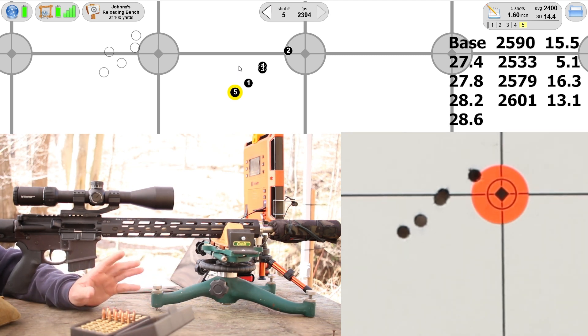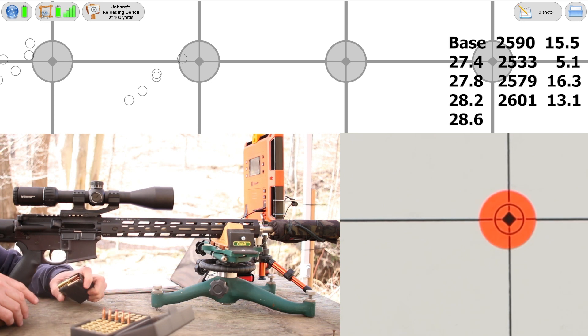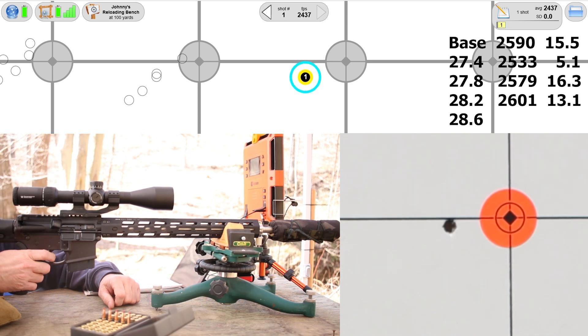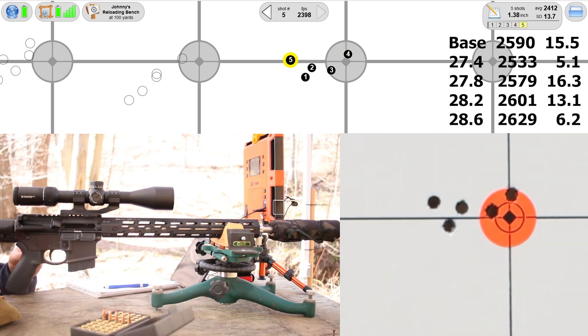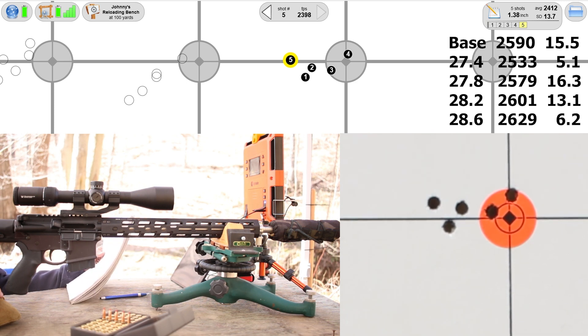Against my better judgment, I'm going to shoot at least one more. Let's see what 28.6 does. You know what, I think that's enough torn up brass for today. The group was awful, 1.38 inches. Velocity was 2629, standard deviation 6.2. Let's get back to the bench.